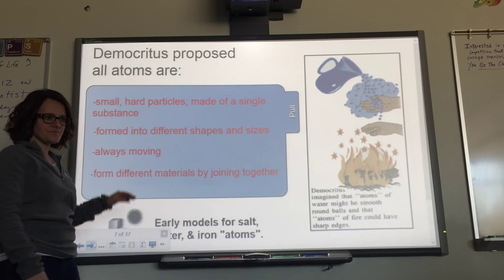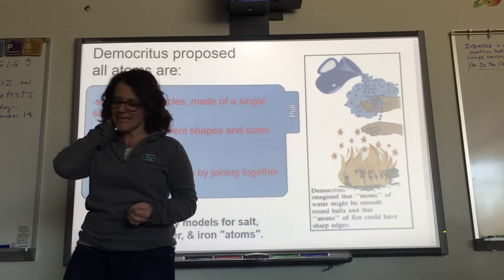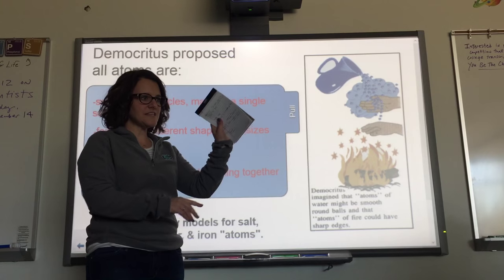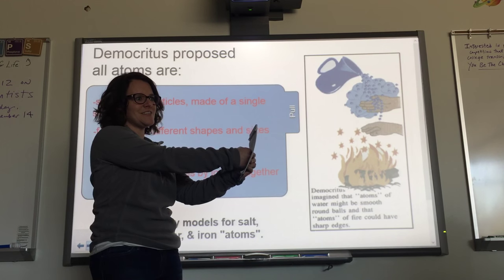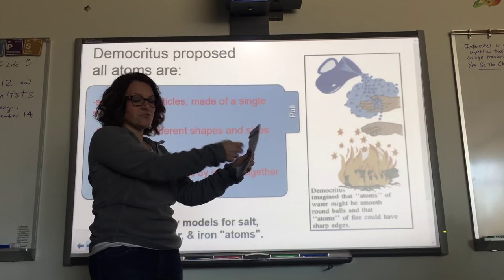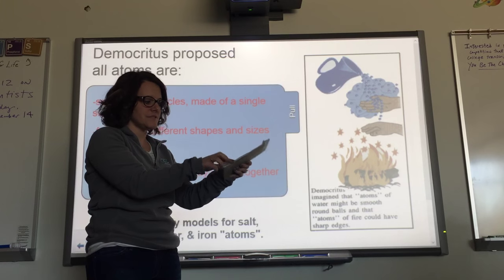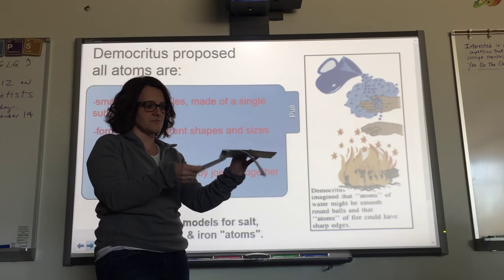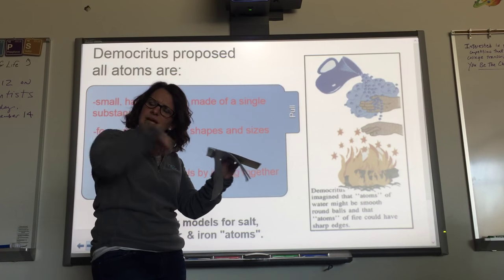The fact that he said atoms are always moving — that's incredible, and now we know atoms do always move. Also, atoms are mostly empty space. But if this table is made out of atoms, why can't I get my hand through it if it's mostly empty space? Because there are millions of layers of atoms just in a piece of paper.